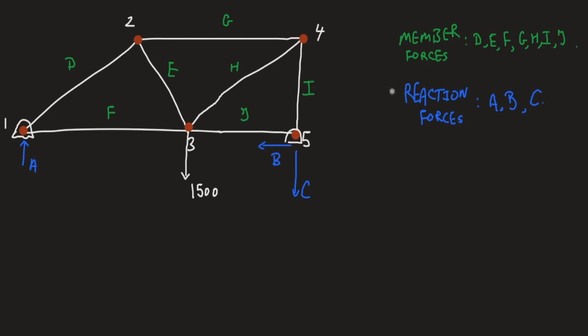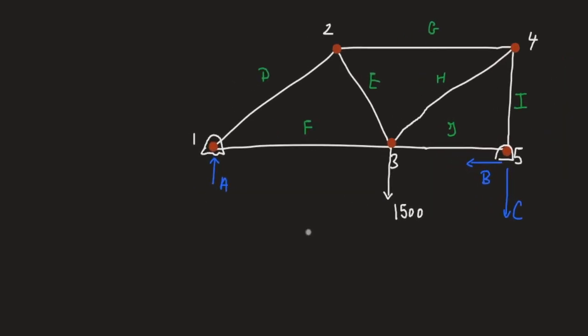The values of all these unknown internal and reaction forces can be found by solving a system of equations. The truss is in equilibrium, so each pin contributes two equations to the system. One equation expresses the fact that the x component of the forces on that pin adds to zero, and the other equation expresses the fact that the y component does also. If I grab pin one, A is not only a label, it's going to be the value of the force.